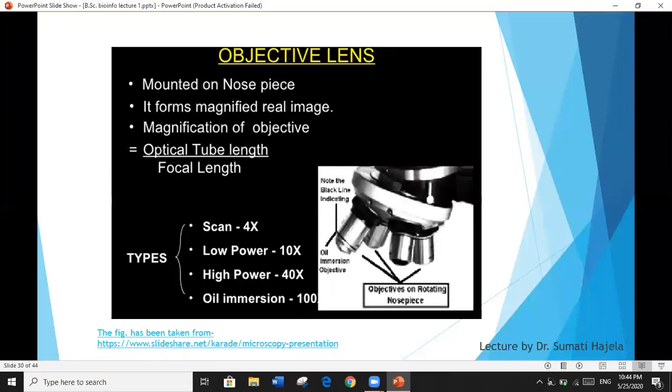Objective lenses: more about objective lenses. You can see here these are mounted on nose piece. It forms magnified real image and magnification of objective, as you have already seen, may be divided by optical tube length divided by focal length. And types of objective lenses are scanning lens, low power lens, high power lens, and oil immersion. These objectives are fixed on rotated nose piece. This immersion objective lens is marked separately by a black ring line indicating that this is immersion objective lens. Each lens has its details written on this part of the lens.